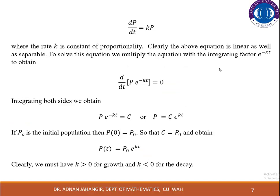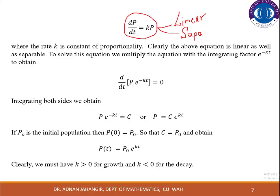This equation represents the model of population dynamics, where p represents the population, t is the time, and k is the constant of proportionality. This equation tells us that the rate of change of population is directly proportional to the current population. This model is a linear differential equation, and you can also solve it using the concept of separable first-order differential equations. Using the method of linear differential equations with an integrating factor, and integrating with respect to t, you arrive at the solution. Because of integration, we have a constant of integration named c.